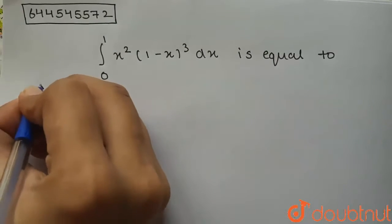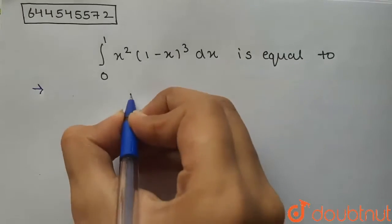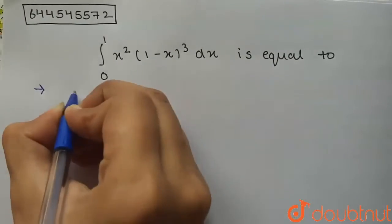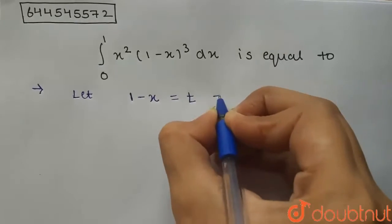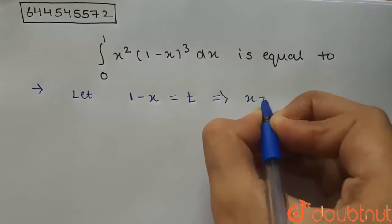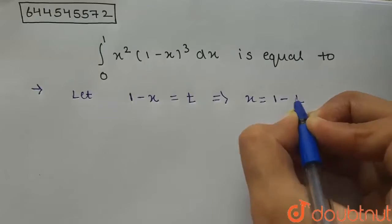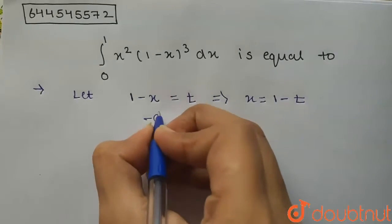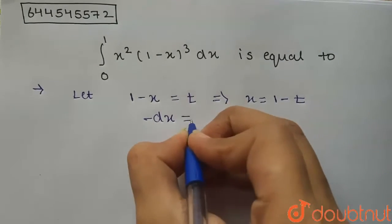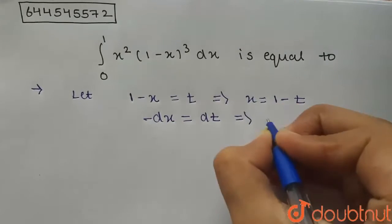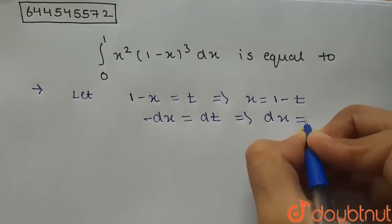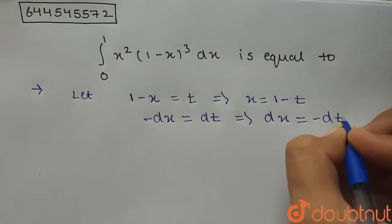We're going to solve this using substitution. Let 1 minus x equal t. From here x equals 1 minus t, and taking the differential, dx will equal minus dt.